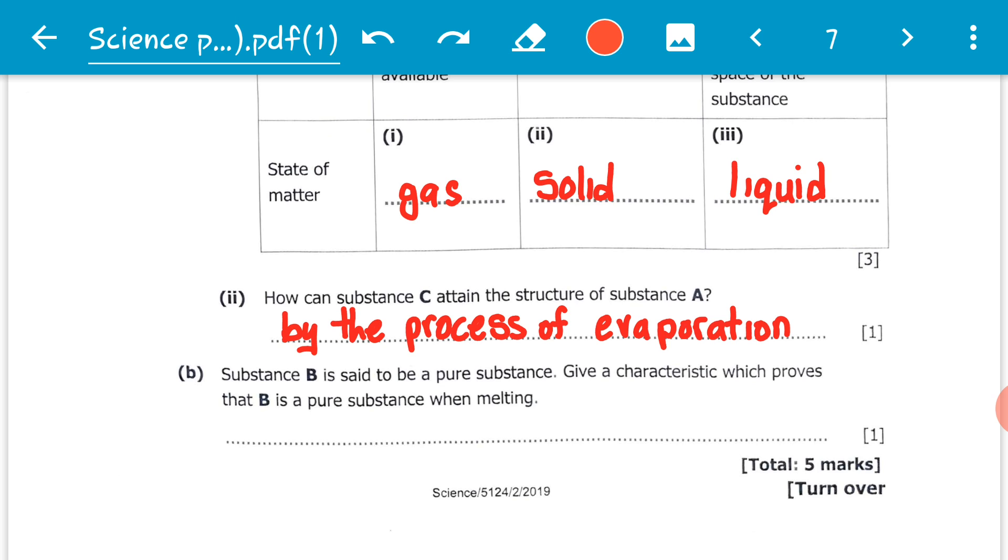Then we go to B. Substance B is said to be a pure substance. Give a characteristic which proves that B is a pure substance when melting. Here we need to prove that B is pure but with a limitation of giving our proof based on the process of melting.